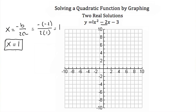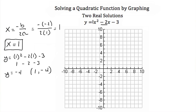Now that I have my axis of symmetry, my next step is to find my vertex. I find that by plugging my x value of my axis of symmetry back into my original quadratic equation. If I do that, I'll have y is equal to 1 squared minus 2 times 1 minus 3. 1 squared is 1, minus 2 times 1 is minus 2, and then minus 3, giving us negative 4. So our vertex is the point (1, -4).